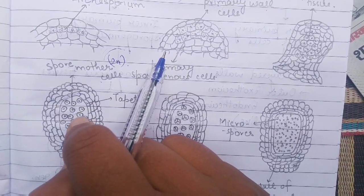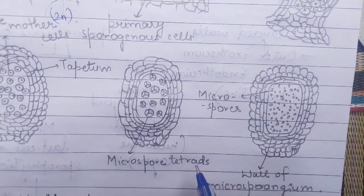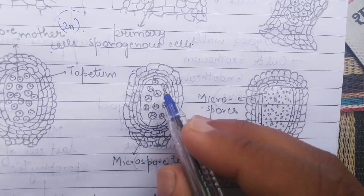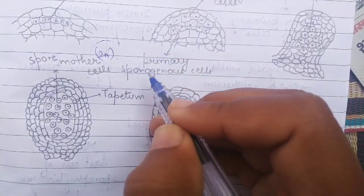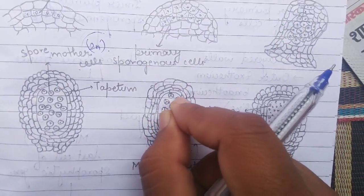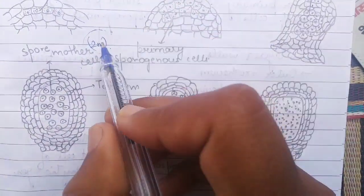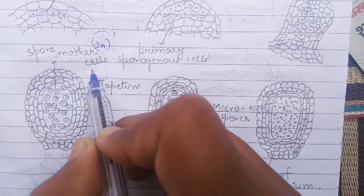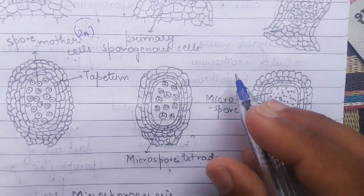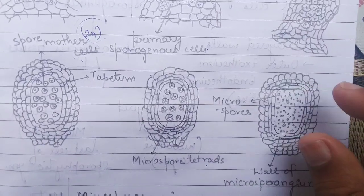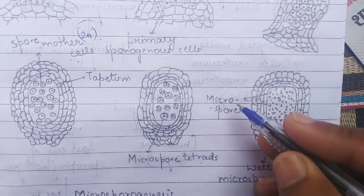These spore mother cells undergo meiosis to form four haploid microspore tetrads. A single diploid microspore mother cell, when divided by meiosis, produces four haploid microspores. They are initially attached to one another but then separate and become haploid. That is why the spore mother cell is the last cell of the sporophytic generation — it leads to the formation of haploid microspores and microspore tetrads. These microspores represent very early development and are shed at the three-cell stage from the Microsporangia.